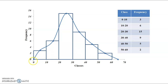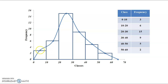For the frequency polygon, the x-axis is marked by class limits and the y-axis is marked by frequencies. The histograms are drawn on the x-axis, and then the mid-point is connected with a smooth curve.